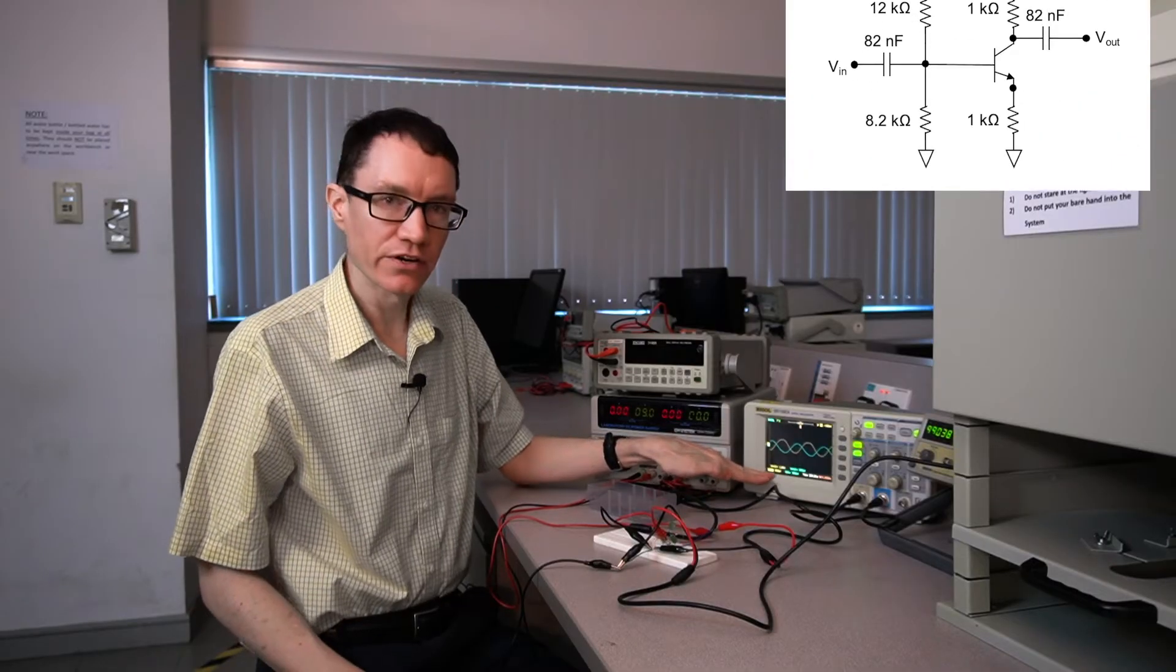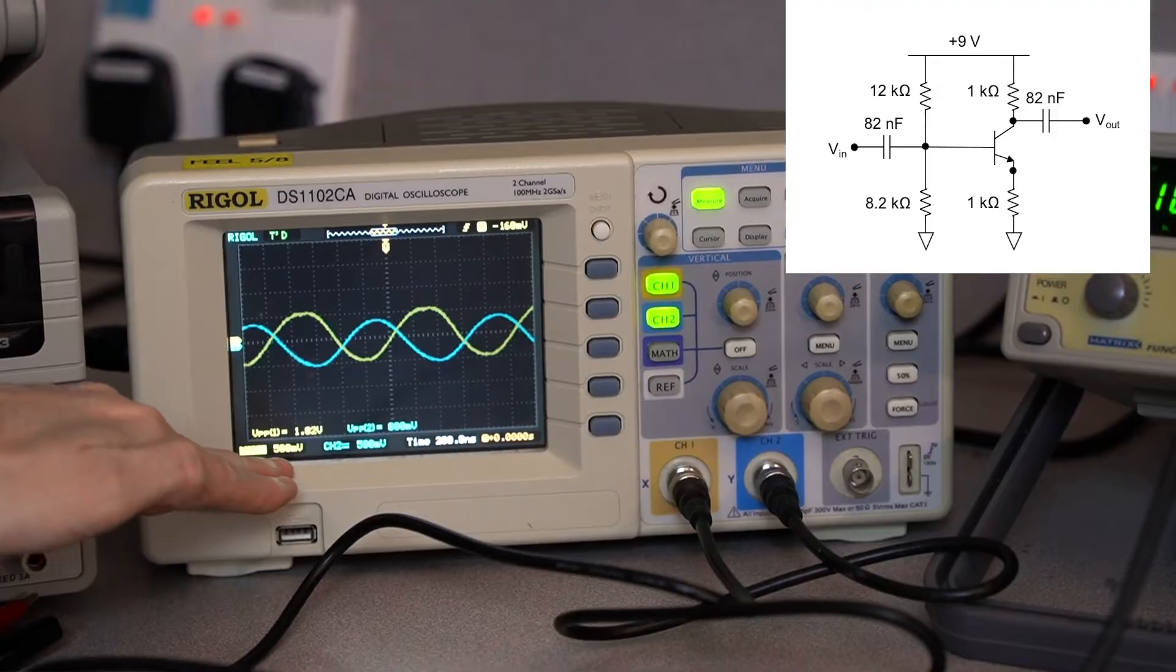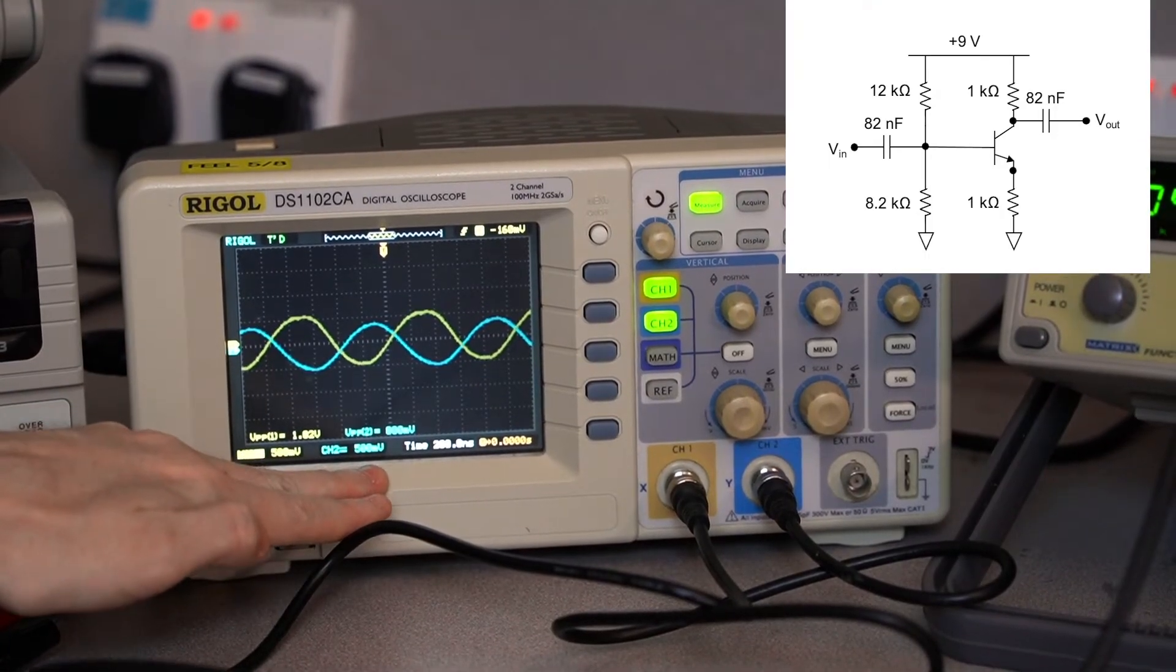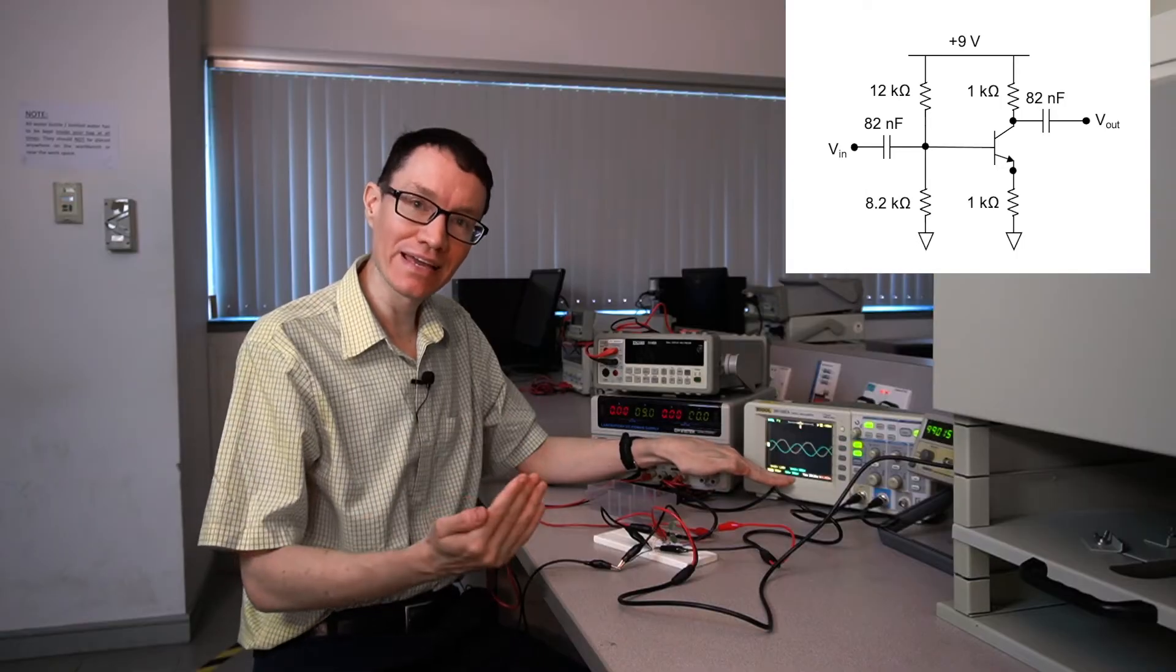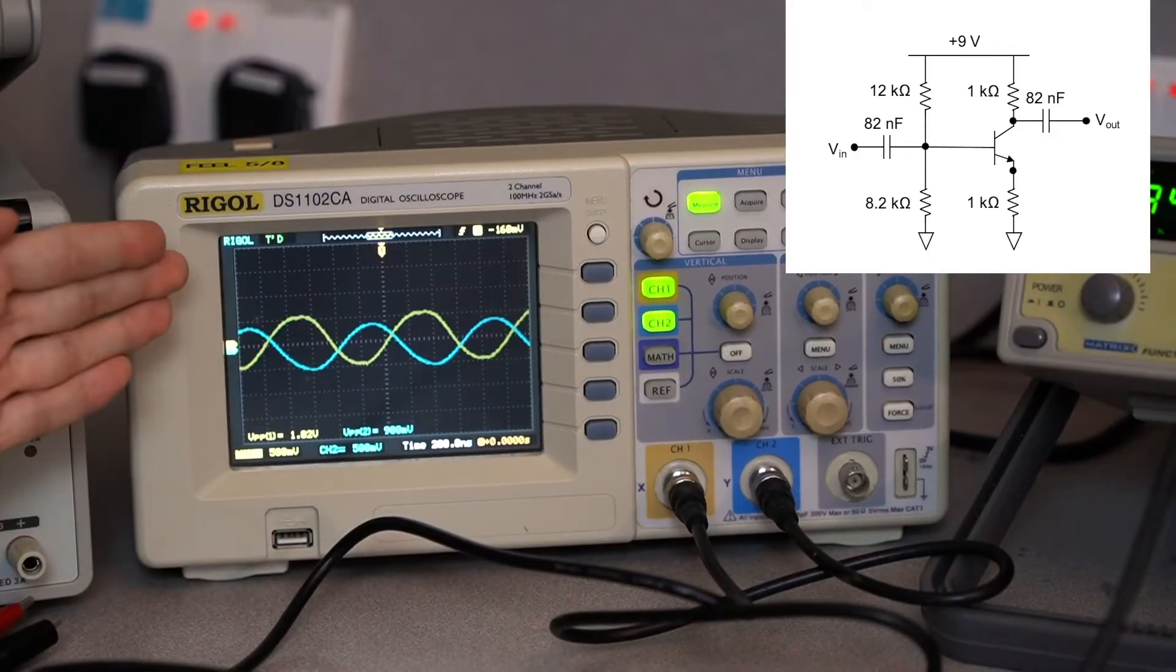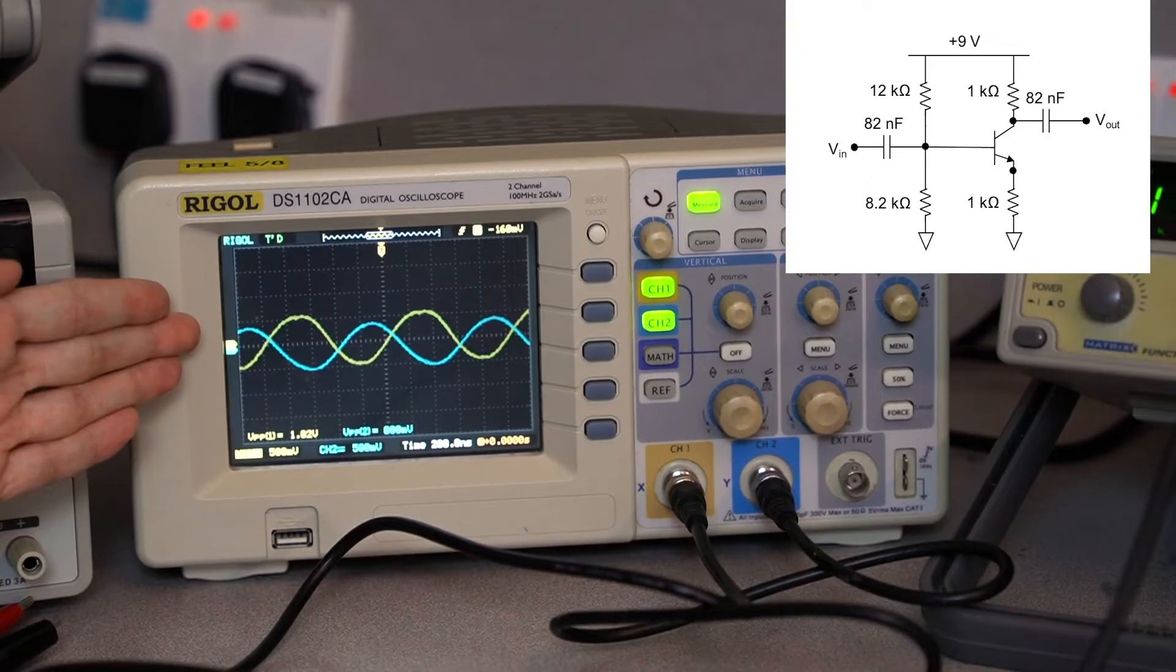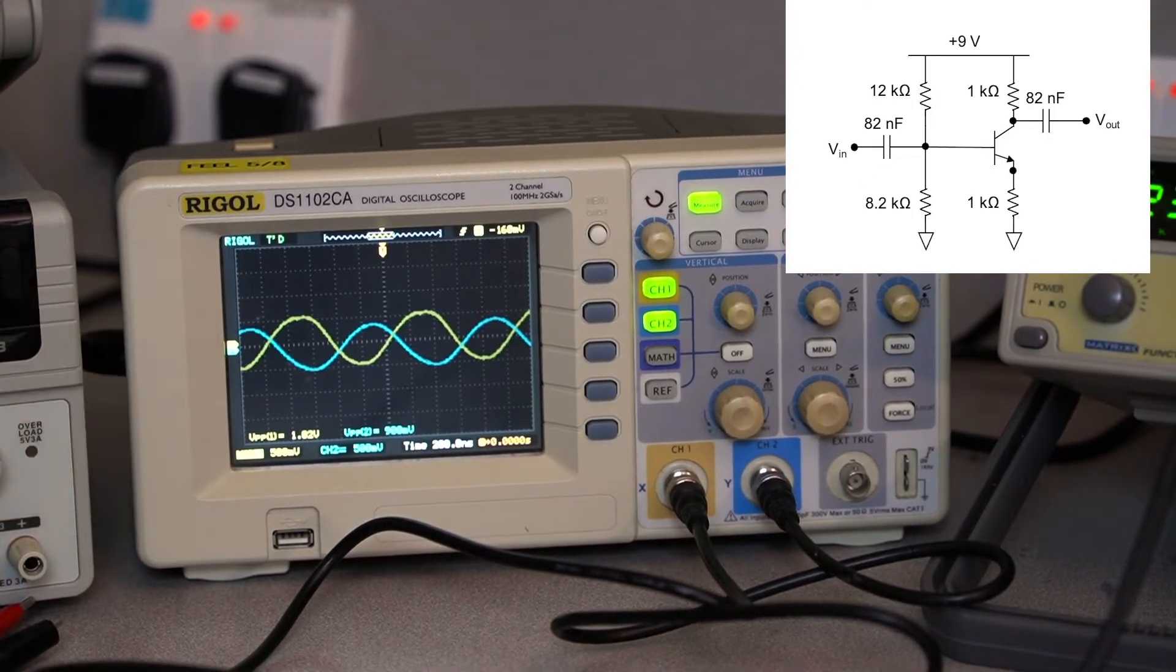Our function generator is giving us a peak-to-peak voltage of approximately 1 volt, and at the output of our transistor, we see about 900 millivolts peak-to-peak. That means our gain is around 0.9. You can also notice these two signals are out of phase with one another. That's an indication that the common emitter configuration is an inverting amplifier.